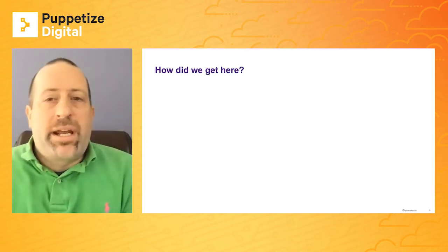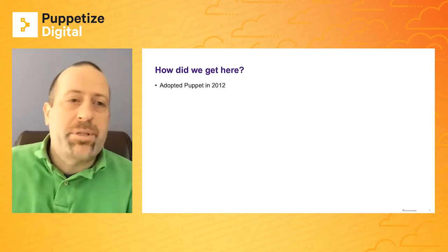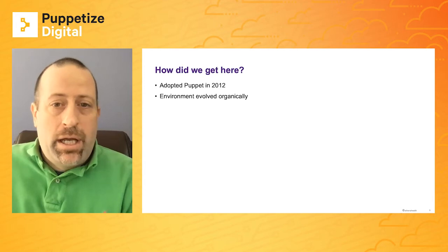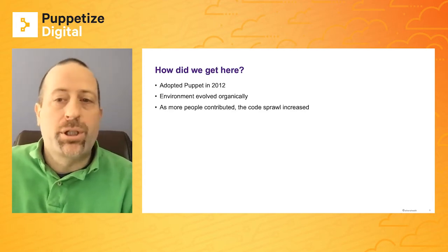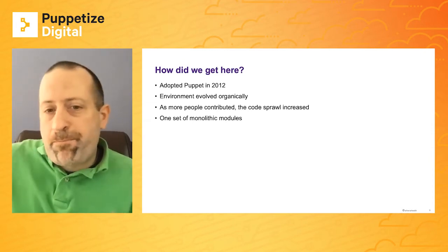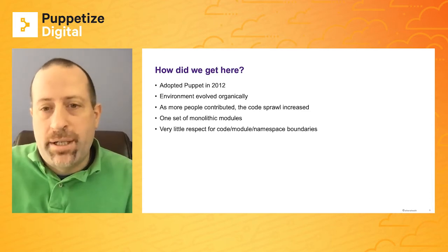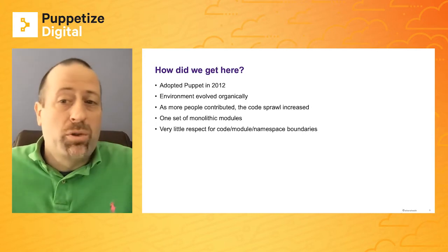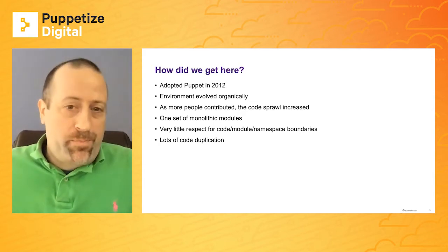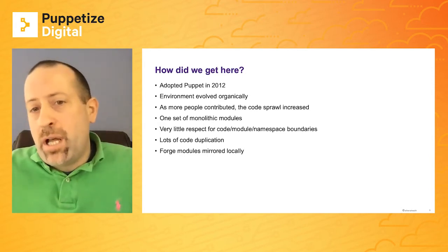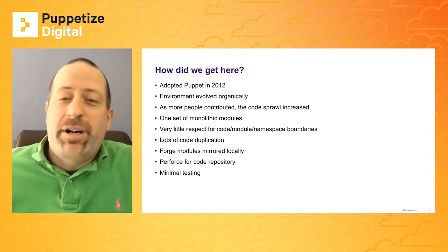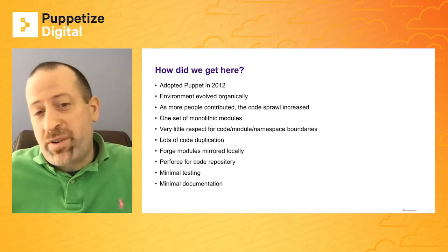So how did we get here? We adopted Puppet in 2012. The environment evolved fairly organically. As time went on, more people started to contribute to the code and the amount of sprawl increased. Everything was developed as one set of monolithic modules. There was very little respect for boundaries with regards to the code — the modules and the namespaces. Lots of code duplication; there were multiple classes that had maybe one line of difference. Forge modules were mirrored and stored locally — many were modified locally. We used Perforce for our code repository and had very minimal testing.